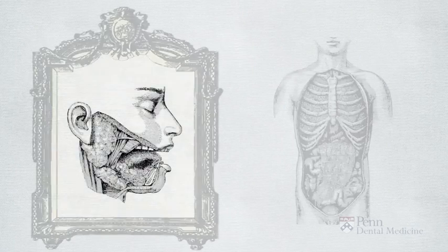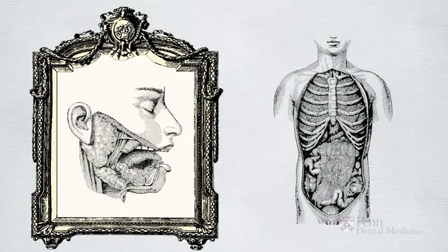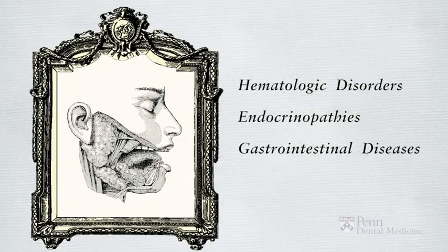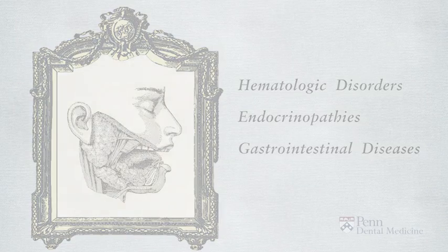The oral cavity is considered a mirror of systemic health. This may be the initial site of presentation of an underlying medical disorder. Hematologic disorders, endocrinopathies, and gastrointestinal diseases are but a few types of systemic disorders that may present with initial signs and symptoms localized to the oral cavity. In addition, the oral cavity may serve as a more accessible location for diagnostic testing to detect systemic disease. For example, obtaining a minor salivary gland biopsy of the lower labial mucosa may aid in the diagnosis of Sjogren's syndrome, an autoimmune disease that may be difficult to detect via other diagnostic testing modalities.